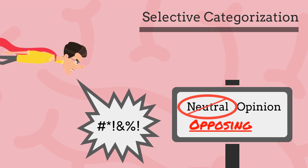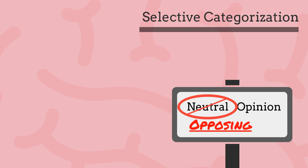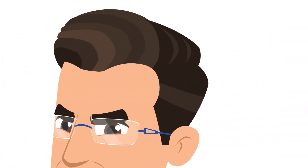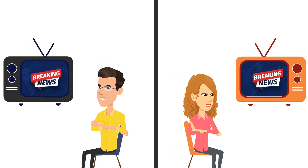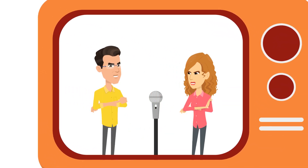Just like the motto: anyone who's not with me is against me. Since we now know how the effect works, is there anything we can do to counteract it? One proven possibility would be the participation of different representatives of the interest groups in the media coverage. But sometimes that can be easier said than done. Can you think of other ways to counteract the hostile media effect? If so, feel free to leave a comment. Thanks for watching.